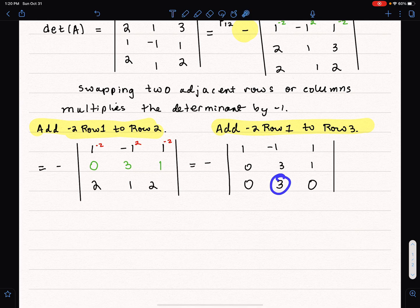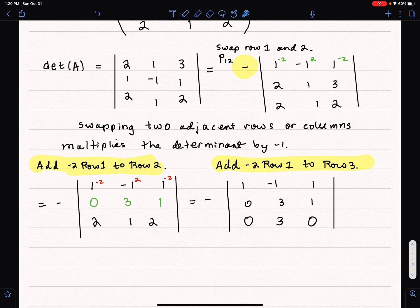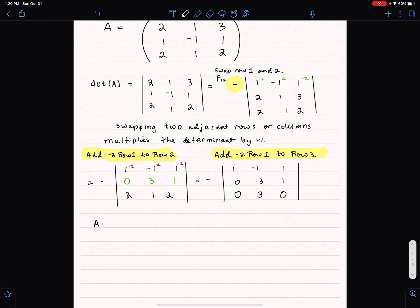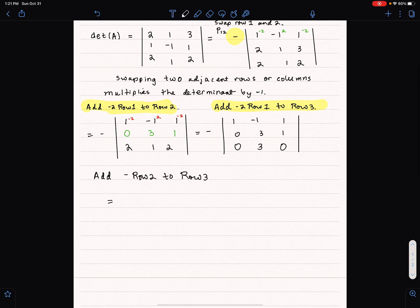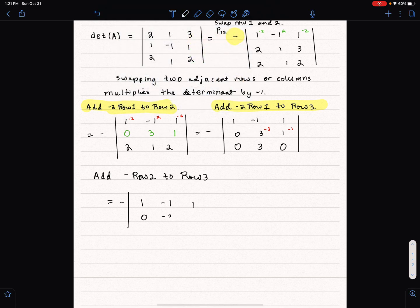Now to get upper triangle form, I need a 0 right here. Upper triangle form means that everything below the main diagonal, all the entries will be 0. So this guy needs to become a 0. To do that, I'm going to add negative row 2 to row 3. That's going to give 0, negative 3, negative 1.